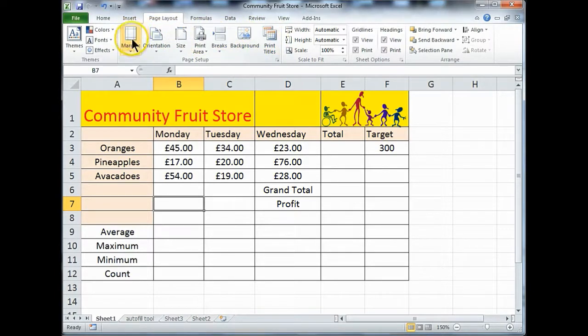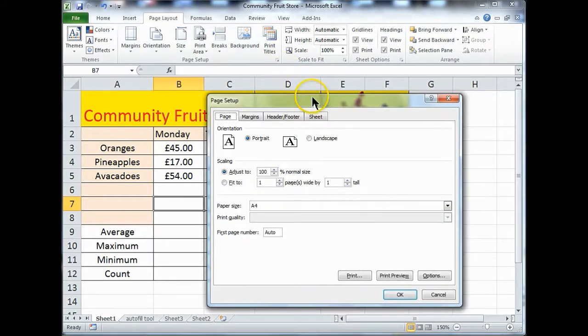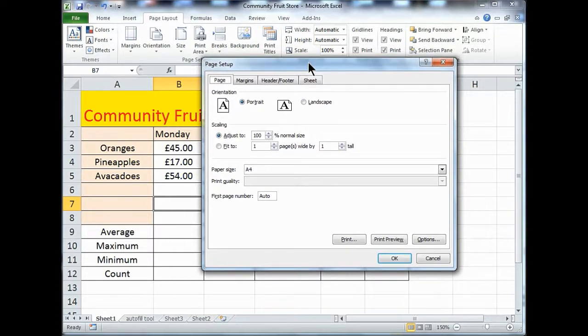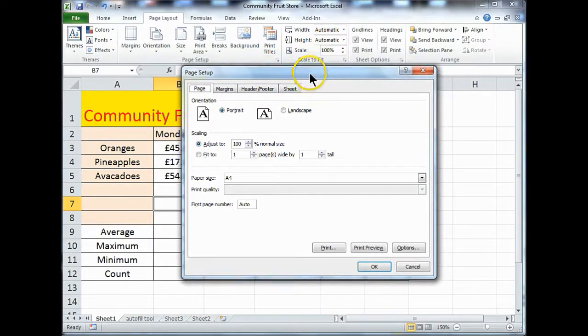One thing that will save you time is if you go to your page setup dialog box, just that little button in the corner of your group. Click onto that. This brings up a very familiar looking window. This is the same one in use from Office 2000, because it has all the useful information here.